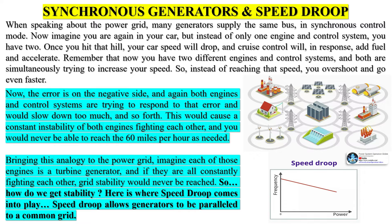Now the error is on the negative side, and again both engines and control systems are trying to respond to that error — they slow down too much, and so forth. This would cause constant instability of both engines fighting each other, and you would never be able to reach 60 miles per hour as needed. Bringing this analogy to the power grid, imagine each engine is a turbine generator — if they are all constantly fighting each other, grid stability would never be reached. This is where speed droop comes into play: speed droop allows generators to be paralleled to a common grid.